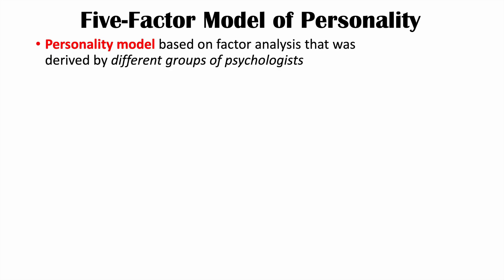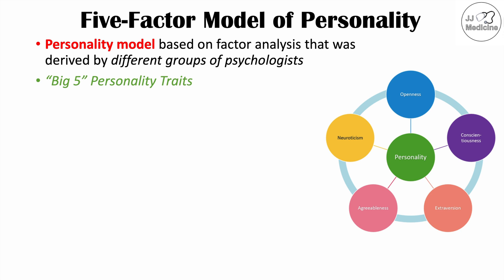The five-factor model of personality is a personality model based on factor analysis, derived by different groups of psychologists — including Goldberg, McCrae, and Costa. When these psychologists looked at many individuals from around the world and from different cultures, they found five factors that held stable and were common amongst people globally. These are what we call the big five personality traits.